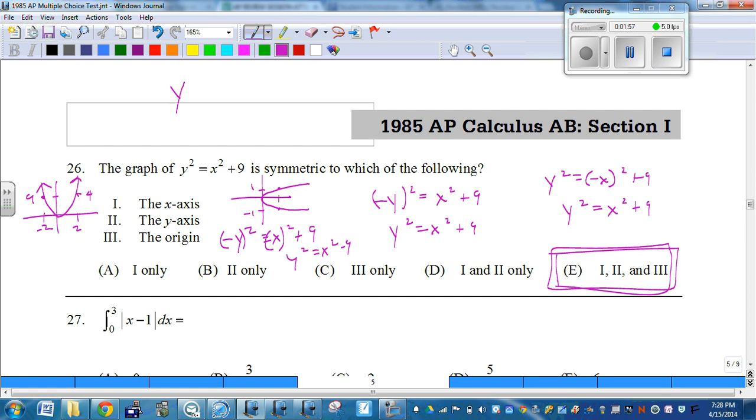So let's say this is y equals x squared plus nine. If we put the opposite of x in, it still comes out to be the same thing, right? So that would be symmetric about the y-axis.